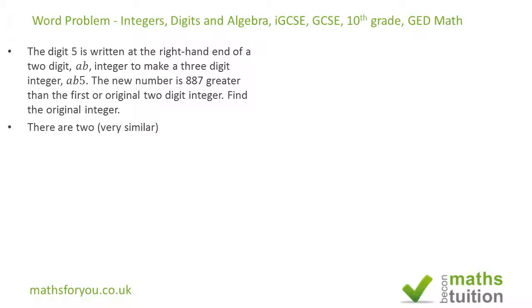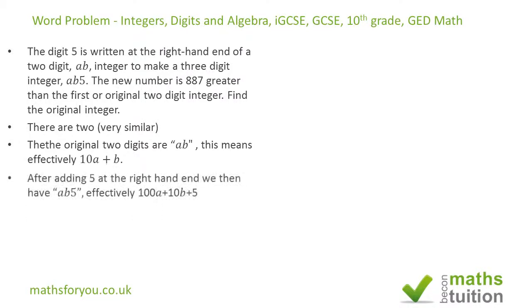So now if we got an integer ab, the value of ab here is 10 times a plus b. If we add 5 at the end of b to make it a three digit integer, the value then becomes 100a plus 10b plus 5, and from this you can work out your values.